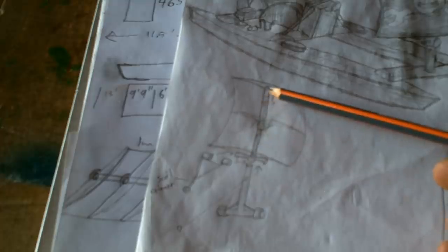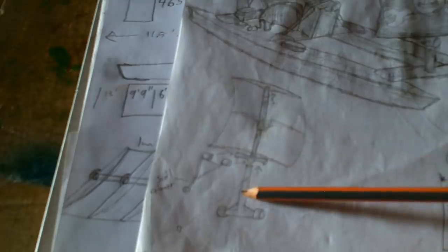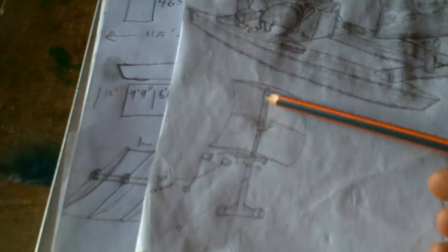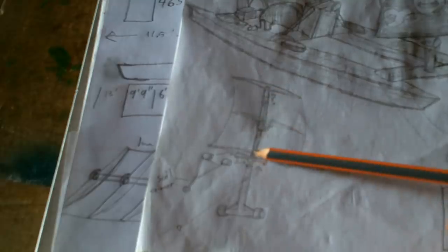And then this pipe will have to be fiberglassed all the way around too, because it needs to be really rigid to keep the sails from twisting.